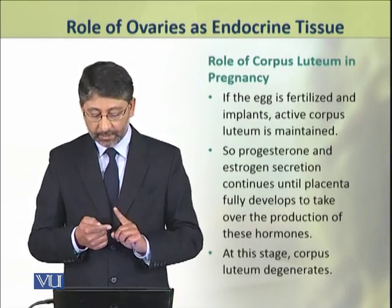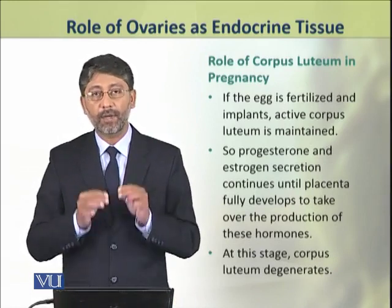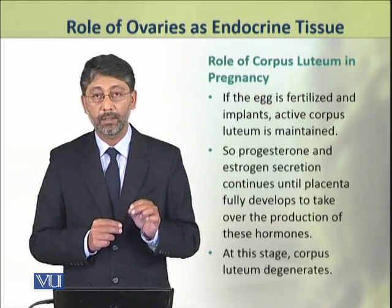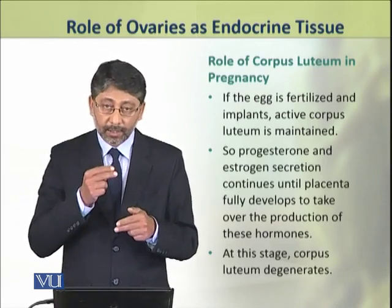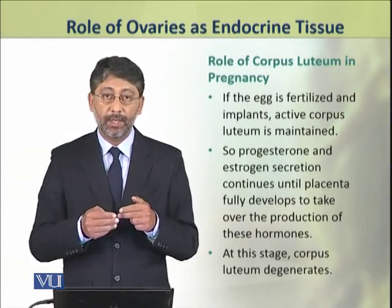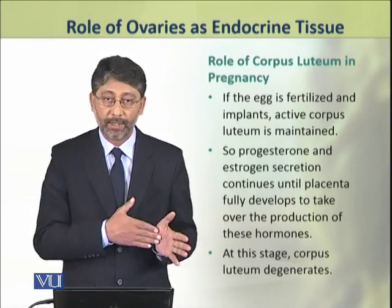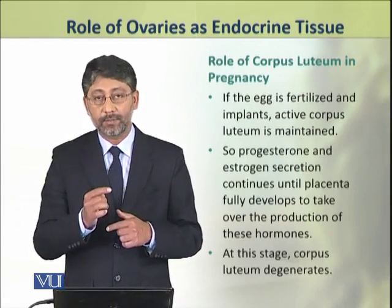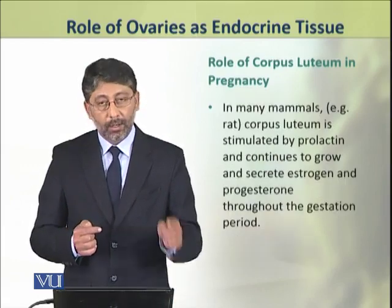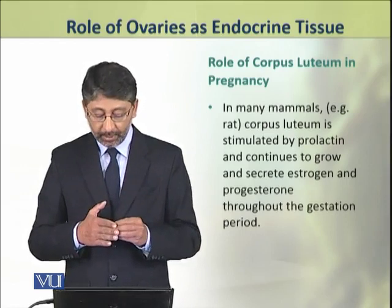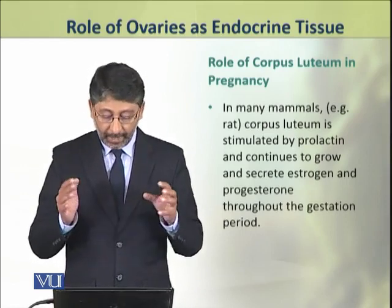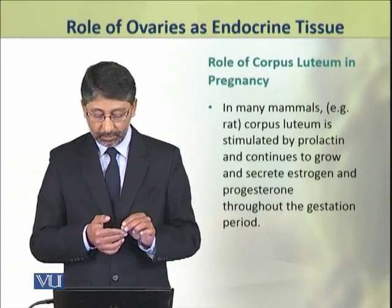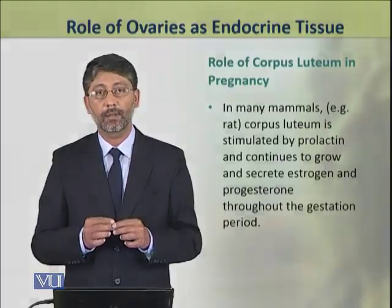However, if the egg is fertilized and implanted, an active corpus luteum is maintained, so estrogen and progesterone secretion continues. This secretion from the corpus luteum continues until the placenta is fully developed and takes over the production of these hormones, at which stage the corpus luteum degenerates. However, in many mammals — for example, rats — the corpus luteum does not degenerate; instead it is stimulated by prolactin and continues to synthesize and secrete estrogens and progesterone throughout the gestation period.